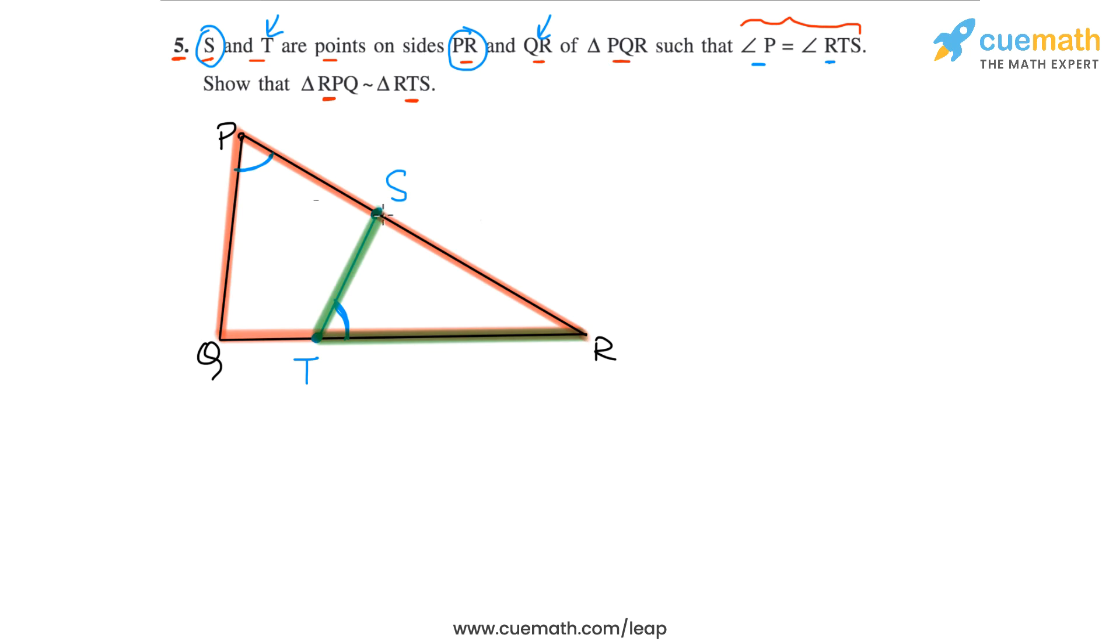We have to show that this is similar to triangle RTS. So we have to show that these two triangles are similar, and make sure you're observing the order of the vertices. So R corresponds to R, but P in the first triangle corresponds to T in the second triangle, and Q corresponds to S.